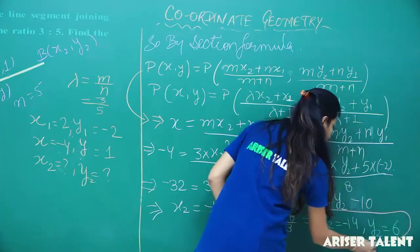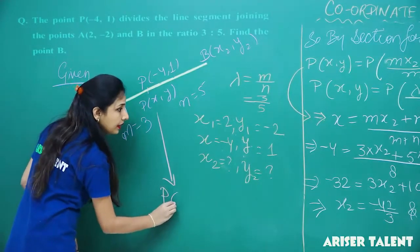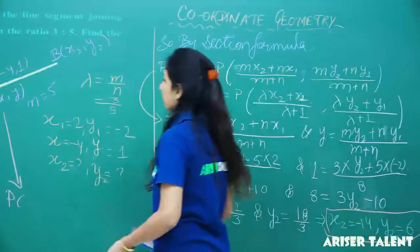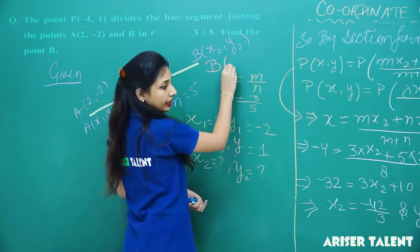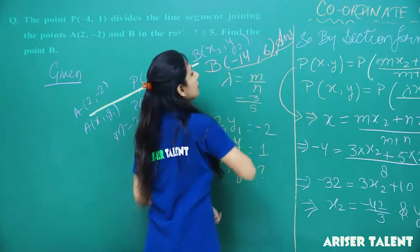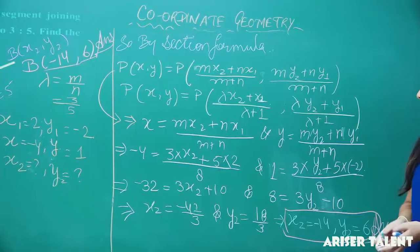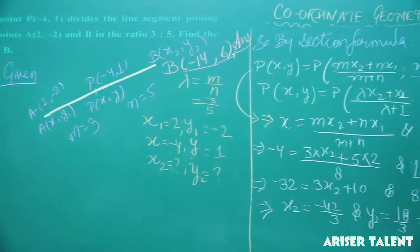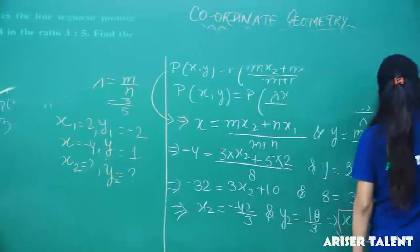So x₂ = −14 and y₂ = 6. Therefore point B is (−14, 6). This is your answer. Note this down, students.